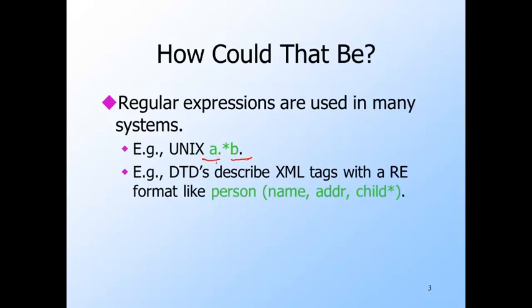For a more modern example, the XML document markup language invites us to describe the structure of documents by a DTD or document type definition. The DTD language consists of descriptions of elements such as the example given here. A person element consists of a name element, followed by an address element, followed by any number of child elements.